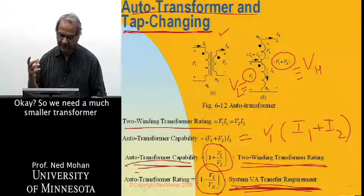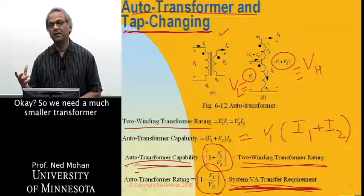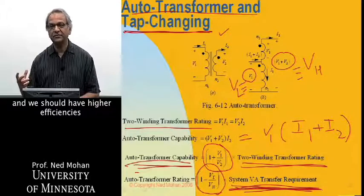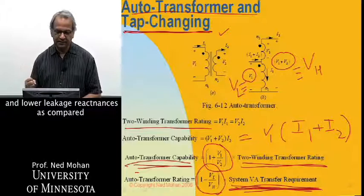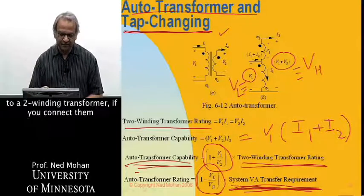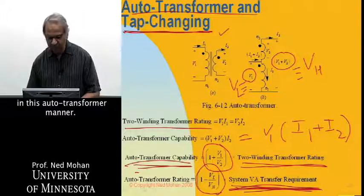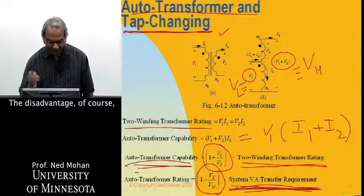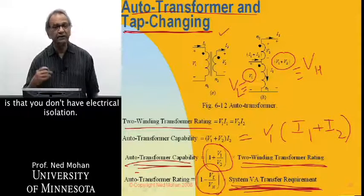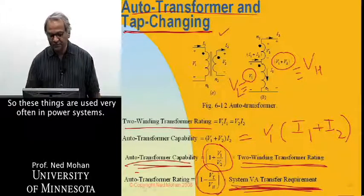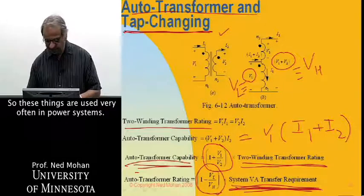So we need a much smaller transformer which will have higher efficiencies and lower leakage reactances as compared to a two-winding transformer if you connect them in this autotransformer manner. The disadvantage, of course, is that we don't have electrical isolation. So these things are used very often in power systems.